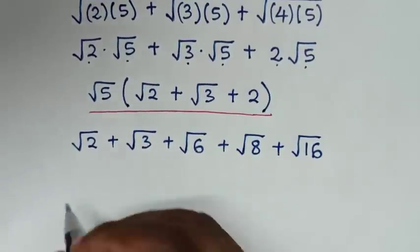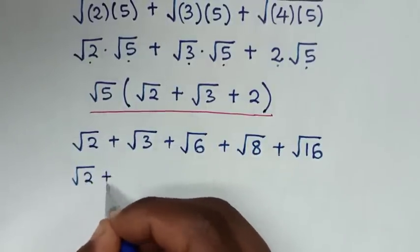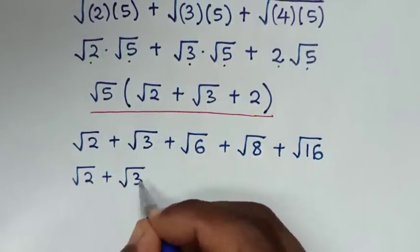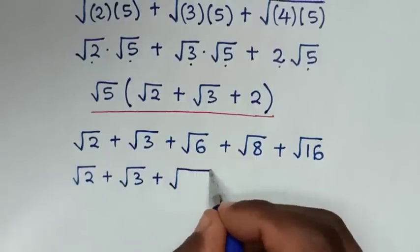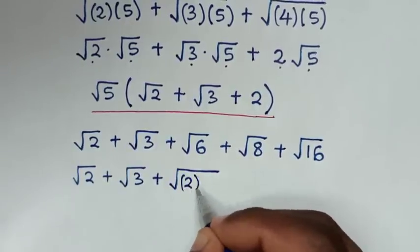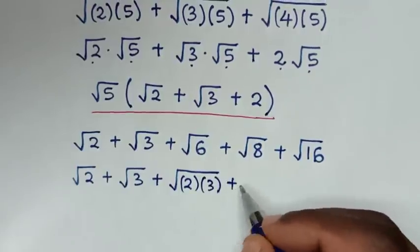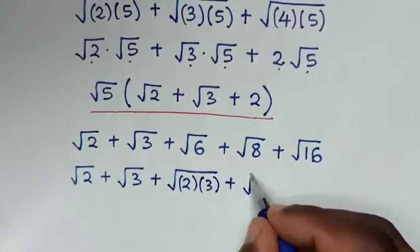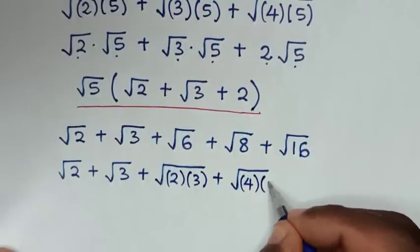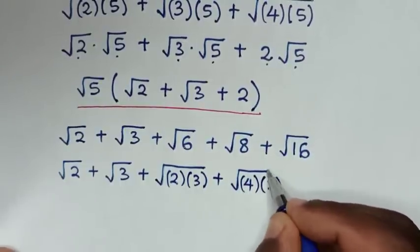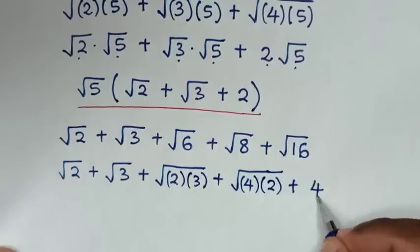In the next step, square root of 6 is the same as square root of 2 times 3. Square root of 8 is the same as square root of 4 times 2. And square root of 16 is 4.